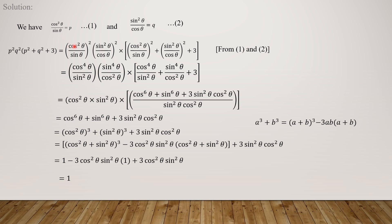p² is cos⁴θ/sin²θ and q² is sin⁴θ/cos²θ. So p²q² gives cos⁴θ/sin²θ × sin⁴θ/cos²θ. Then p²+q² is cos⁴θ/sin²θ plus sin⁴θ/cos²θ, plus three.